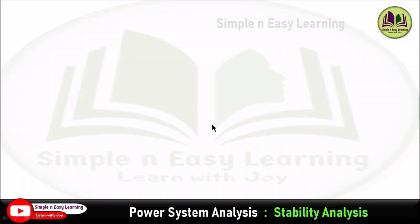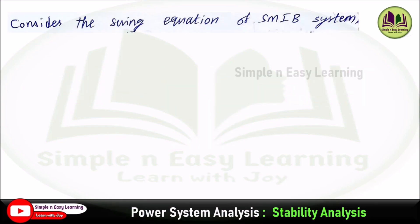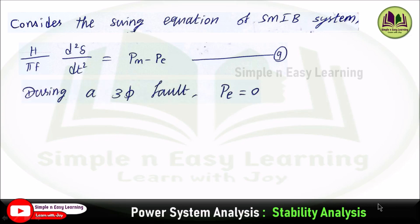In power system analysis, under stability analysis, today we are going to discuss the critical clearing time. Consider the swing equation derived using a single machine infinite bus system: h by pi f into d squared delta divided by dt squared equals mechanical power minus electrical power. We call this the accelerating power — this is the ninth equation, and this is a continuation of the critical clearing angle derivation.